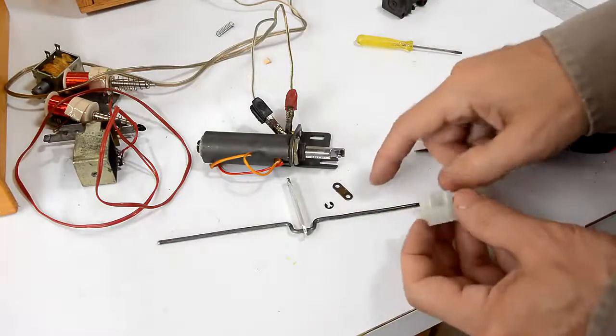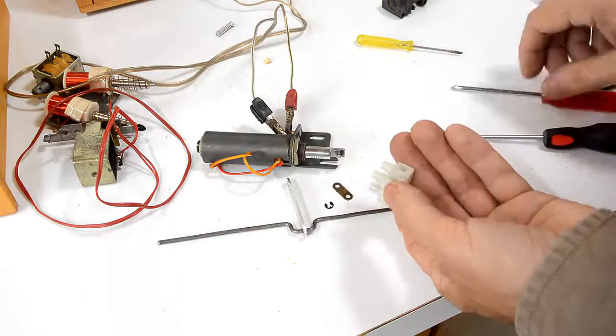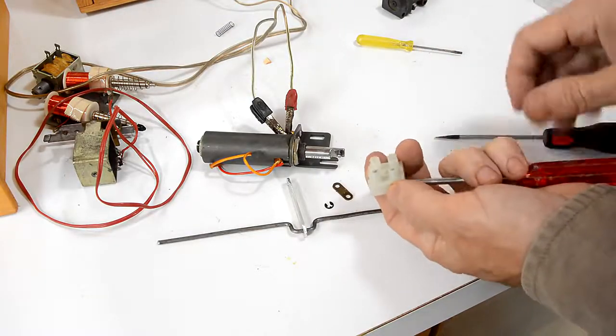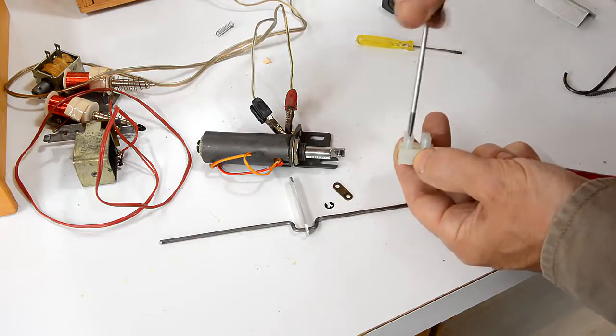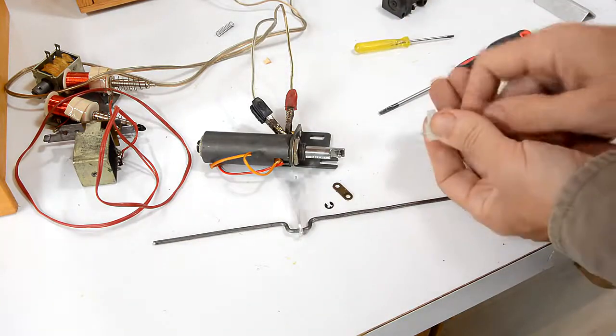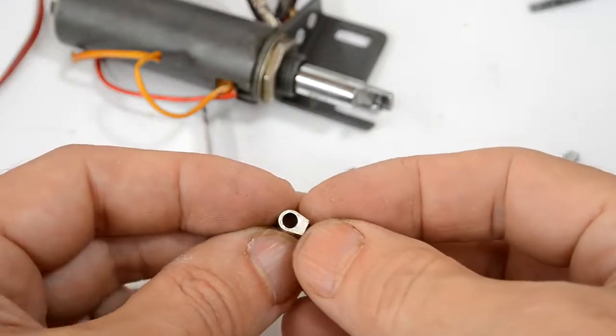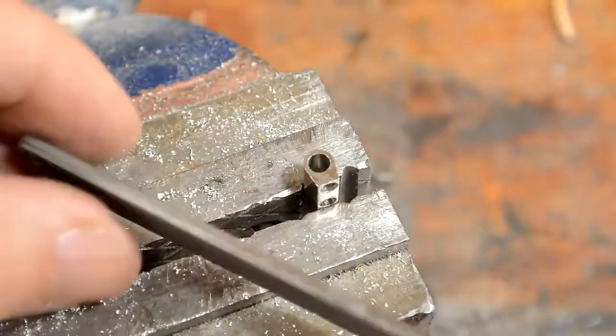I still need some sort of camshaft for activating when to energize the solenoid. For that I think I might use the inside of this barrier strip connector thingy. This thing already looks like it could be a cam, I just need to round it off a little bit.